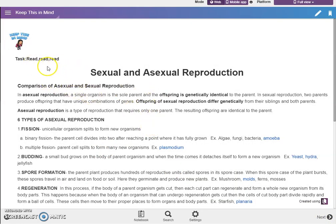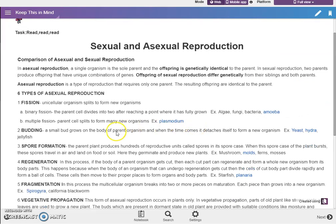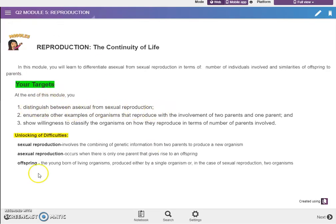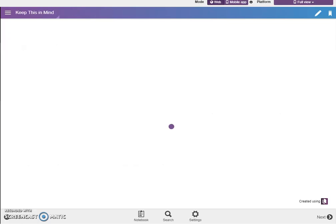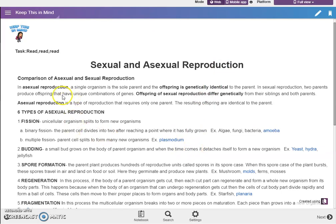Let's proceed to the next page. The task is you're going to read here. So all the important terms, all the important points, the objectives are here. To distinguish between asexual and sexual reproduction is there. Enumerate examples of organisms that reproduce with involvement of two parents and one parent, it's there. And show willingness to classify organisms and how they reproduce in terms of the number of parents involved, it's also there. And some are in the activities. We have made it bold, the important words. For example, asexual reproduction, offspring is genetically identical to parent. Then for offspring of sexual reproduction, differ genetically.